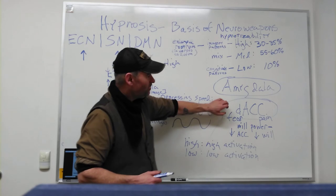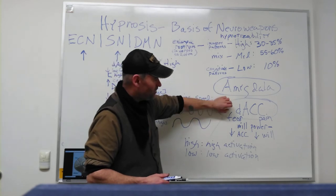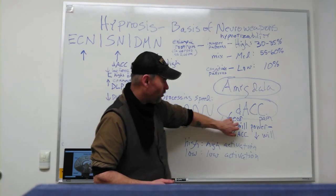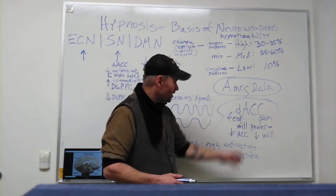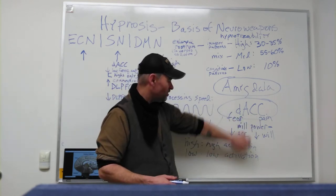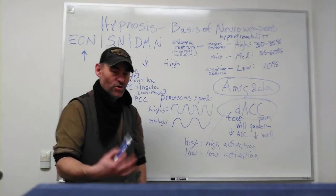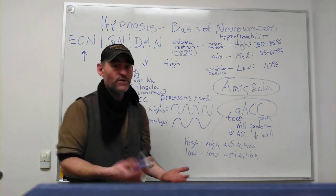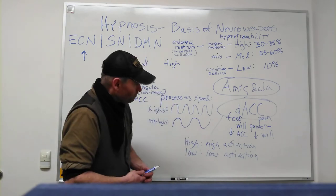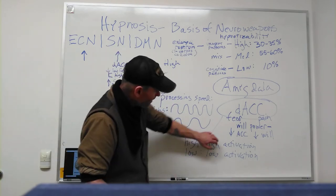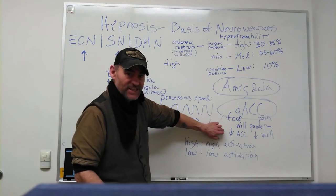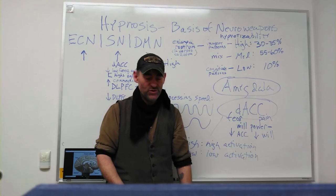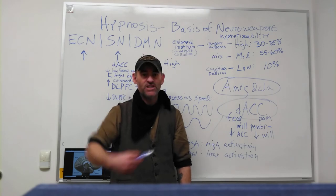The interesting part in its relationship to the anterior cingulate cortex is that they're both based in fear and pain. Also the ACC is controlling your willpower, your will to survive on your own, your will to think for yourself. As the activation in the ACC goes down, one's willpower goes down, one's ability to desire to keep going, desire to think for themselves.